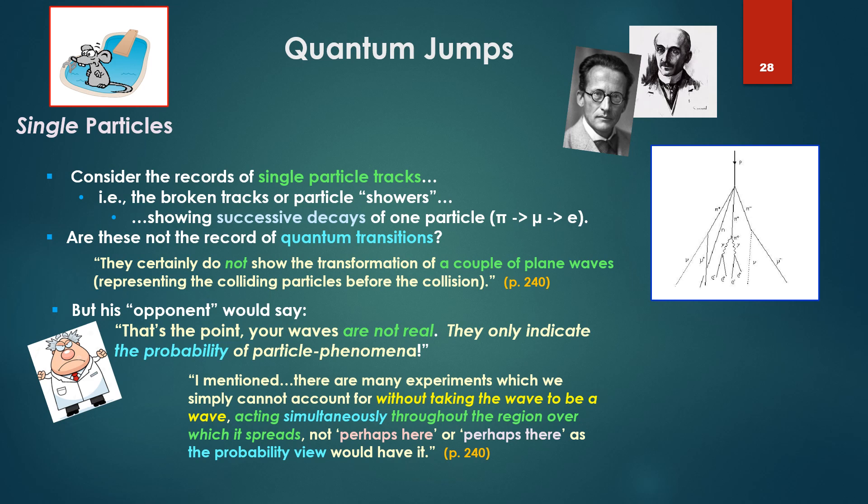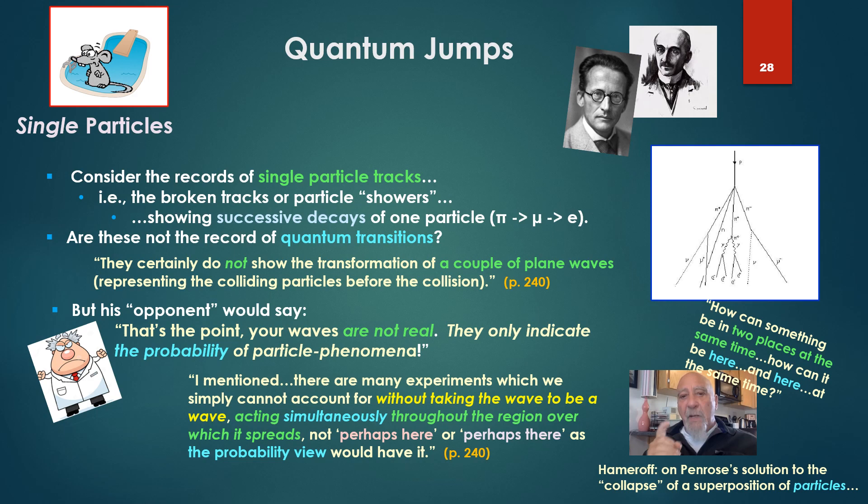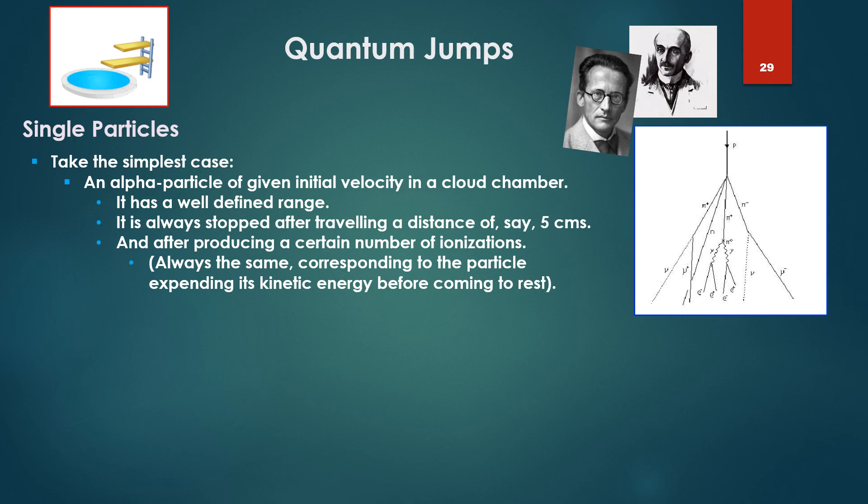He says, I mentioned, there are many experiments which we simply cannot account for without taking the wave to be a wave. Without taking the wave to be a wave, acting simultaneously throughout the region over which it spreads. Not perhaps here or perhaps there, as the probability view would have it. Gotta let that sink in. Remember Stuart Hameroff describing the probability view: how can something be in two places at the same time? How can it be here and here at the same time? Probability view. Take the simplest case, an alpha particle of a given initial velocity in the cloud chamber. It has a well-defined range. It has always stopped after traveling the distance of, say, five centimeters, and after producing a certain number of ionizations.